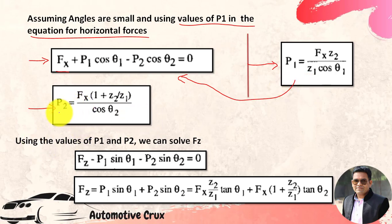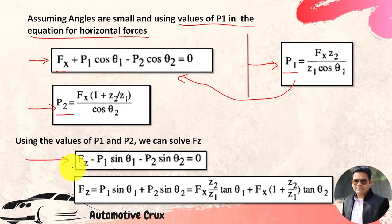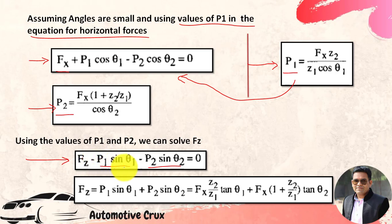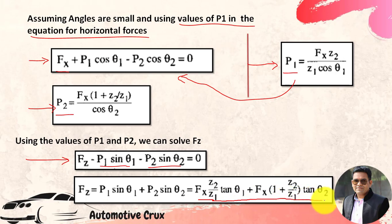Using the values of P1 and P2, we can resolve Fz from the vertical force equilibrium equation. Fz minus the two vertical components of the trailing arm forces P1 and P2 — considering opposite directions as negative — gives us: Fz equals P1 sin θ1 plus P2 sin θ2. Putting the values of P1 and P2 into this equation, we get the value of Fz in terms of Fx, the tractive force. This is the equation of vertical reaction force in terms of drive force.